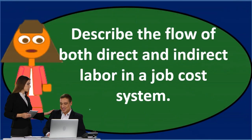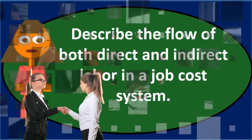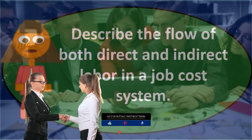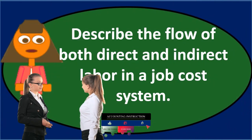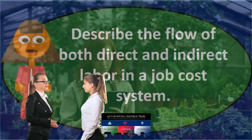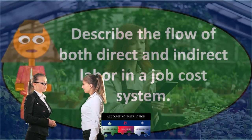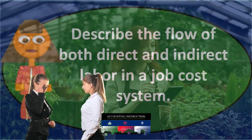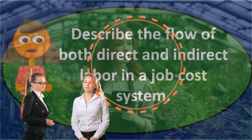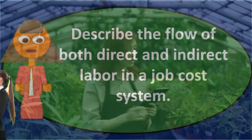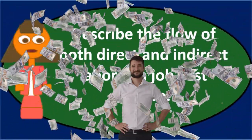Eventually, after the overhead is allocated, indirect labor moves to work in process along with other overhead. Once the jobs are completed, the costs — including all labor — move from work in process to finished goods inventory. Finally, when the inventory is sold, those costs move from finished goods to the income statement in the form of cost of goods sold.